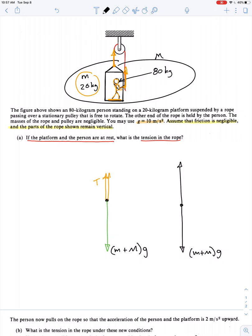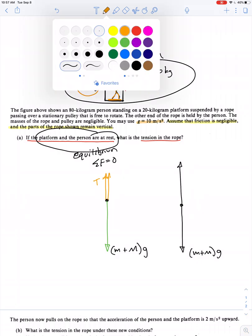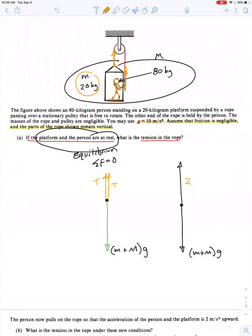Quantity little m plus big M times g, and then a vector of equal length in the other direction. Now, why equal length? Because we're told the platform and the person are at rest. So it's a case of equilibrium. The net force has to be zero. So we can say pointing up is a value of 2T.